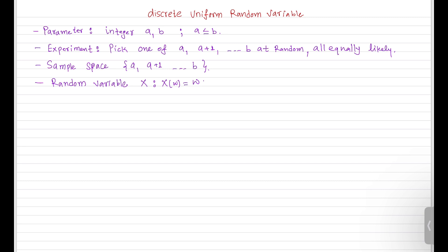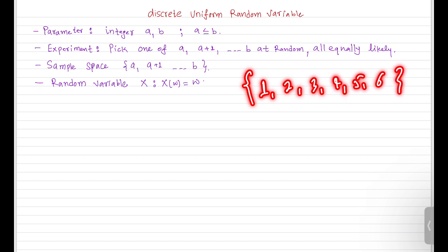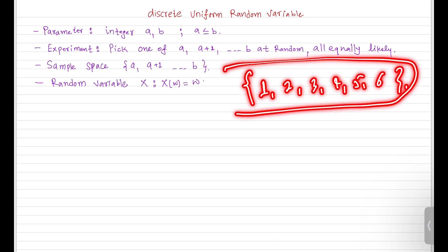We can think of an experiment where we are rolling a die. What will be the outcome of that experiment? The outcome will be 1, 2, 3, 4, 5, and 6. If you look at this outcome, all the elements are in a certain range between 1 to 6. From our probability law, we assume that all these outcomes are equally likely. Let's suppose we have a random variable x associated with this experiment.